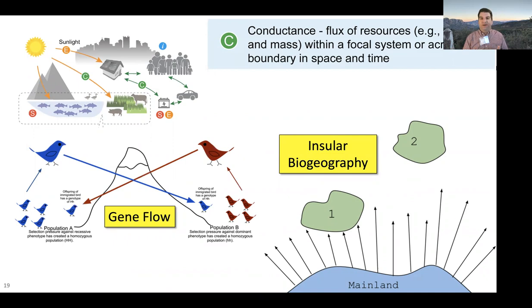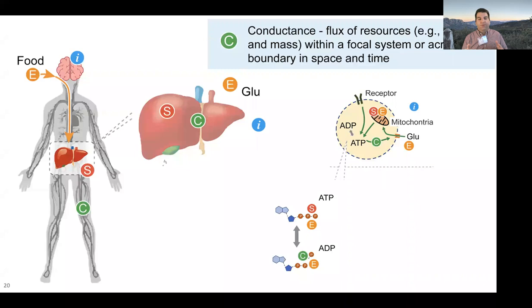Island biogeography theory is much about how easy it is for an organism to get from one space to another, so conductance is really fundamental. Even at lower scales, when an animal eats something, those nutrients don't actually get incorporated into the bloodstream until sometime after. So there is a rate limitation there. At the lowest scale, it takes time to turn ADP into ATP, and then it takes time for that ATP to be found by metabolic processes inside the cell. So we can talk about limitations in flux at all of these different scales.